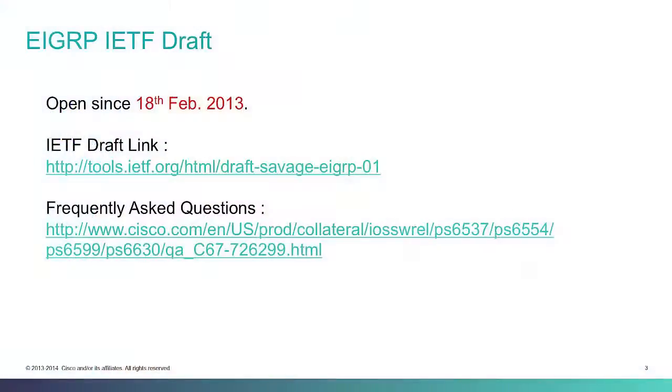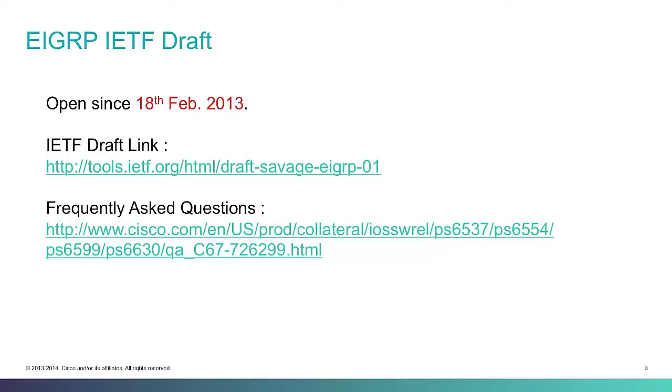I've heard Cisco opened up EIGRP sometime back. Why exactly did Cisco do that? The main idea behind opening up EIGRP is to grow the protocol further. Almost every day, I come across customers running huge deployments full of Cisco devices, but there would be one non-Cisco device somewhere in between which cannot run EIGRP. Because of this, even though customers want to use EIGRP, they're not able to. So that's why Cisco opened up EIGRP, so that it can run irrespective of the multi-vendor deployment internetwork.